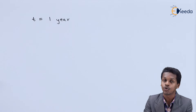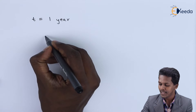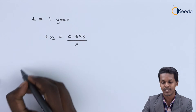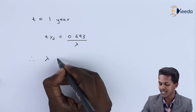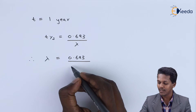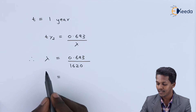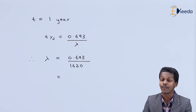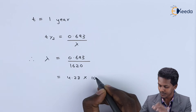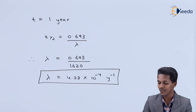Since the time duration is in years, the decay constant must be in year⁻¹. Using the formula t½ = 0.693 / λ, we get λ = 0.693 / t½. With t½ = 1620 years for radium, the decay constant is found to be 4.28 × 10⁻⁴ year⁻¹.